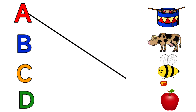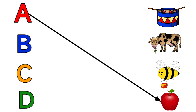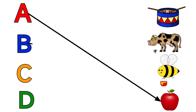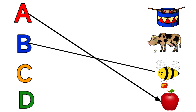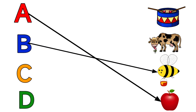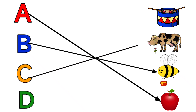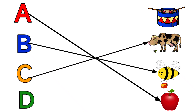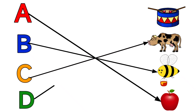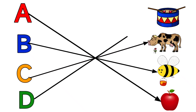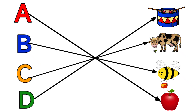A for Apple, B for Bee, C for Cow, D for Drum.